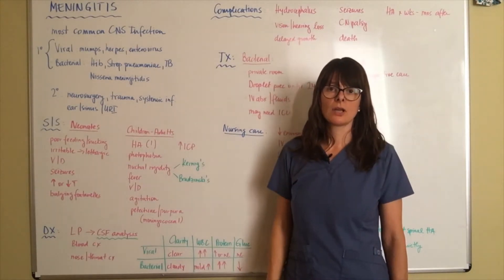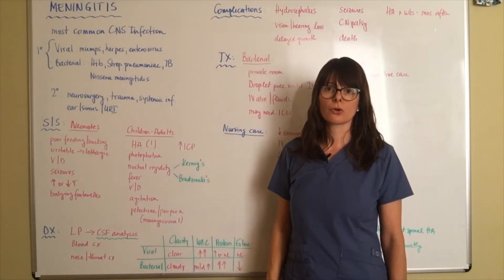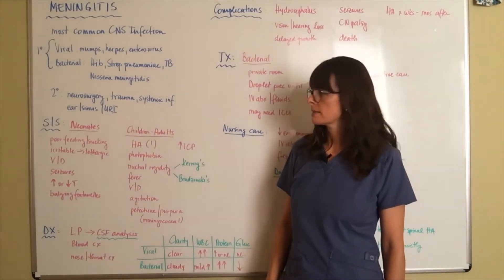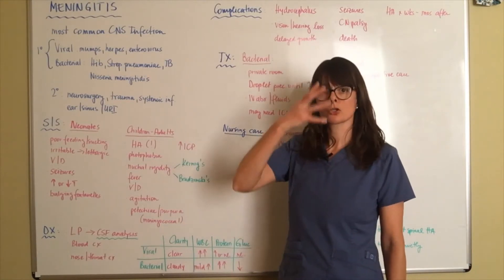As well as infections of the head, ears, eyes, nose and throat, so the HEENT system, because they're so close to the brain they can spread easily causing inflammation of the meninges.